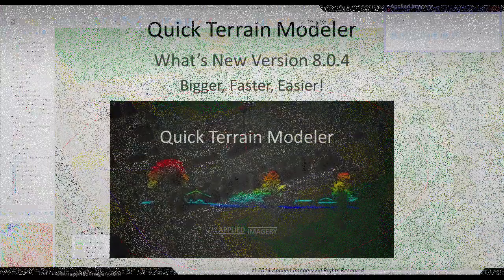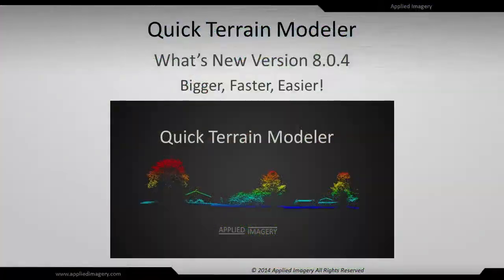Welcome to the QuickTrain Modeler version 8.0.4 What's New video. The theme for this release is bigger, faster, and easier. Bigger because you can load more data, faster because we have optimized many functions, and easier because we have simplified workflows and added new tools to make life easier for our users.